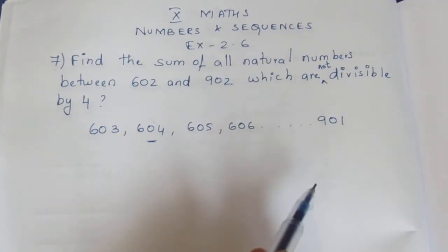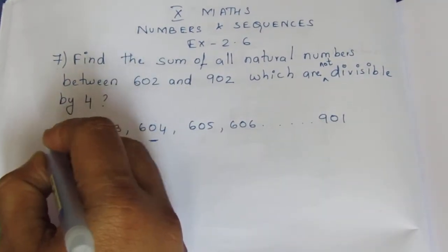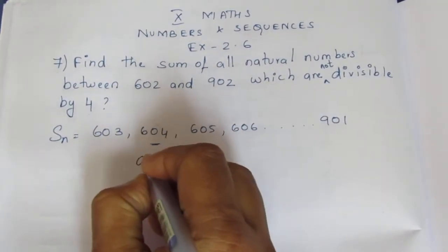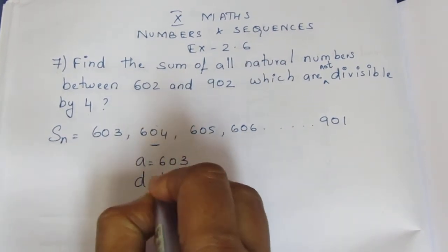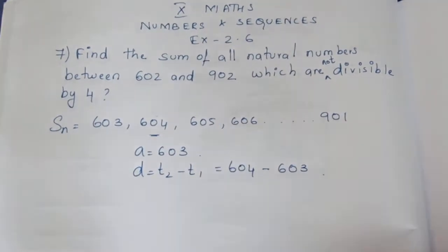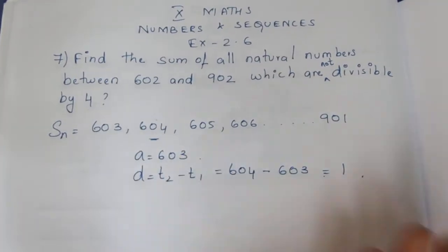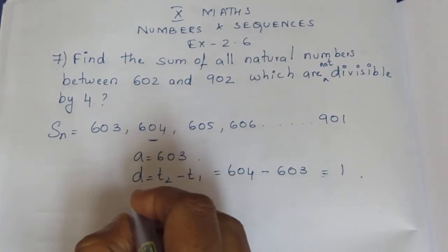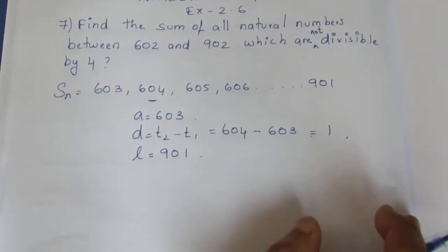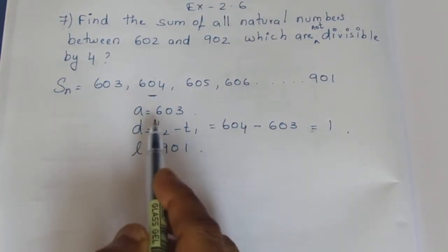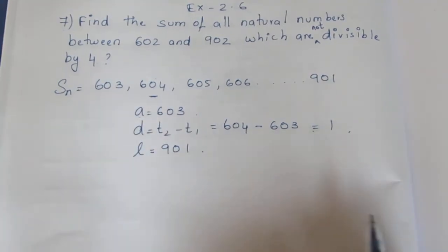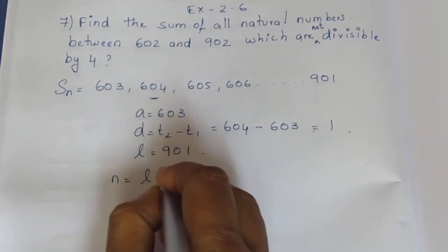For the full sum, the first term A is 603, and the common difference D is T2 minus T1, that is 604 minus 603, which equals 1. The last number L is 901. Using the formula N equals L minus A by D plus 1, we can find N. Then we apply the sum formula S equals N by 2 into A plus L.